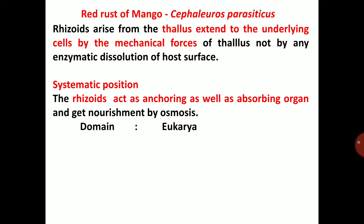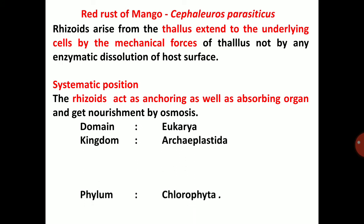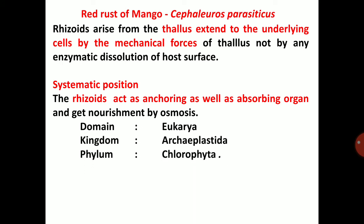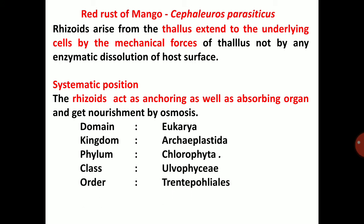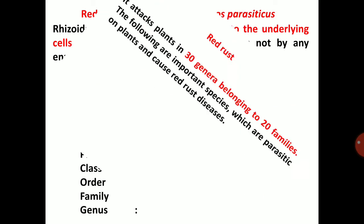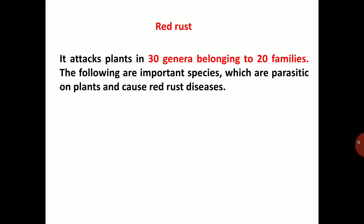Taxonomic classification: Domain - Eukarya; Kingdom - Archaeplastida; Phylum - Chlorophyta; Class - Ulvophyceae; Order - Trentepohliales; Family - Trentepohliaceae; Genus - Cephaleuros. Red rust attacks plants in 30 genera belonging to 20 families.